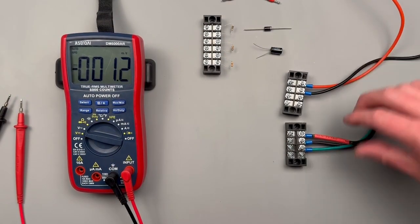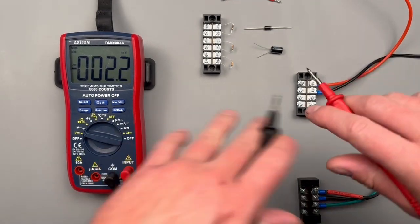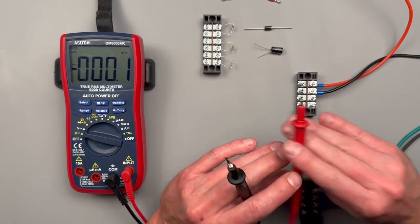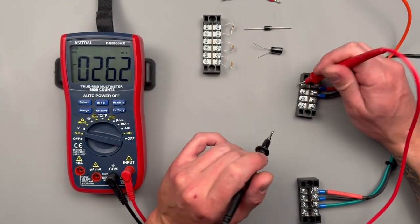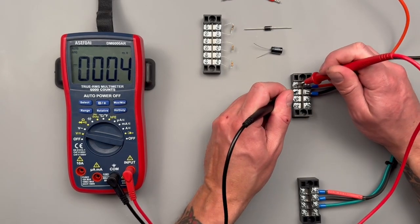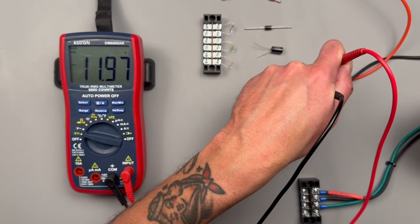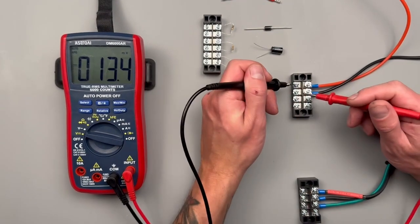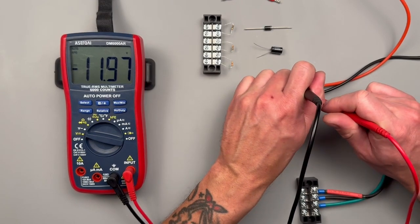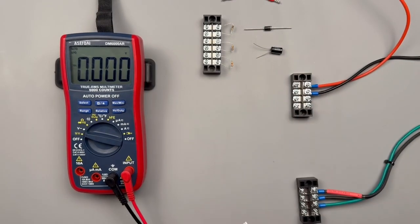When we're taking a DC measurement, polarity of our leads is going to be important. Our red lead needs to go to the power source and the black lead needs to go to common. That's going to give us an accurate measurement. We should see 11.97 volts. If I switch the lead polarity, it's not that big of a deal, but you're going to see that minus sign pop up on the very left hand side indicating that polarity is reversed.